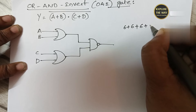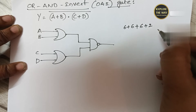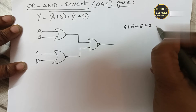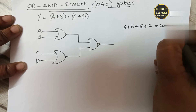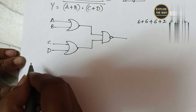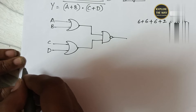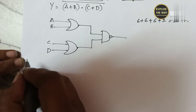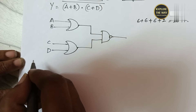At the last level, one inverter is used — each inverter requires 2 transistors. Totally, 20 transistors are used. In order to reduce the number of transistors and also to reduce the delay, CMOS logic can be used.